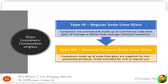Type 3 glass is regular soda lime glass — untreated, made up of commercial soda lime glass of average or better than average chemical resistance. Type 4, also called general purpose soda lime glass or NP glass, is made from soda lime glass and supplied for non-parenteral products. Type 4 glass should not be used for parenteral products and is intended only for oral or topical use.